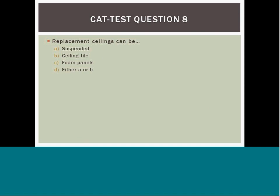Question 8: Replacement ceiling panels can be A) suspended, B) seatile (tile), C) foam panels, or D) either A or B. Both A and B are the best answers because they are most commonly used with the T-grid track system that makes the panels removable.